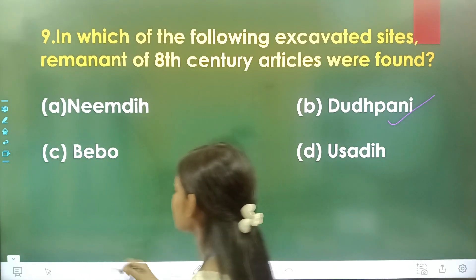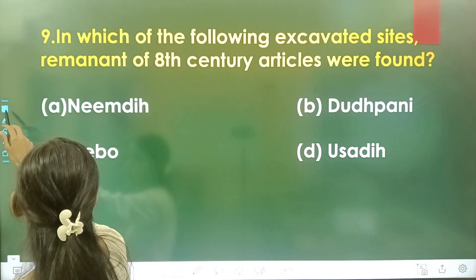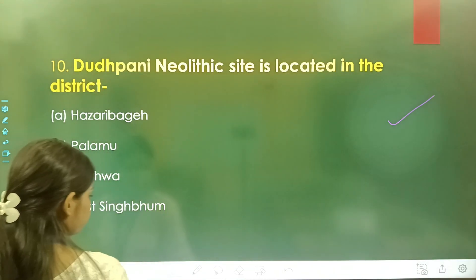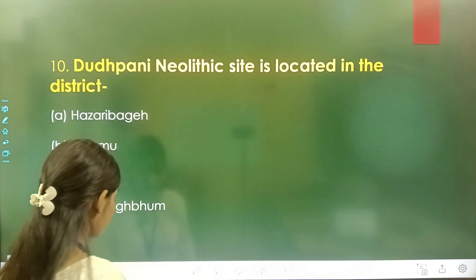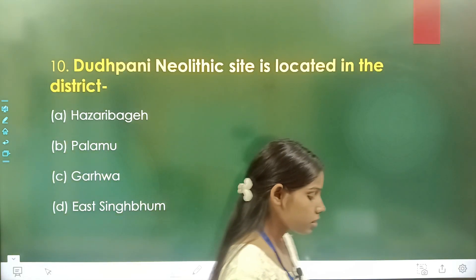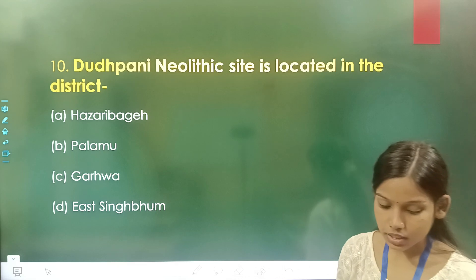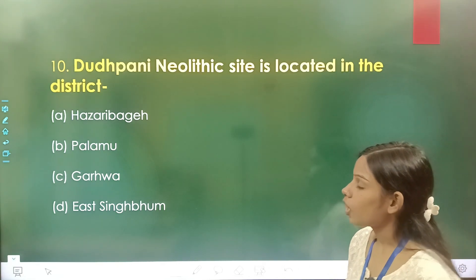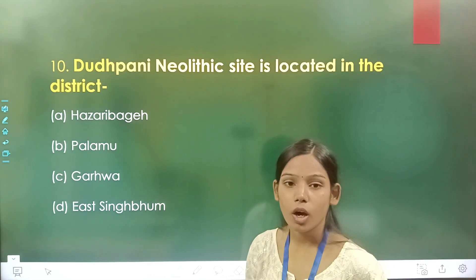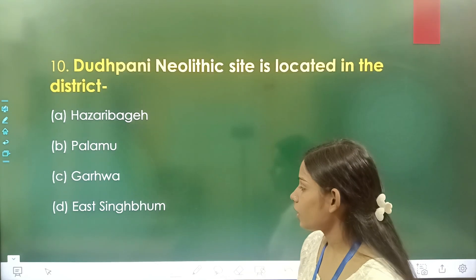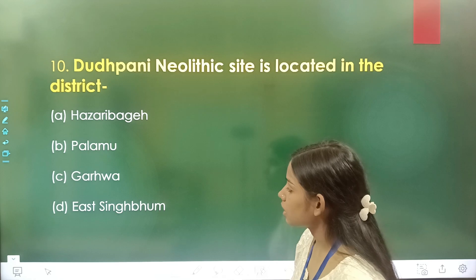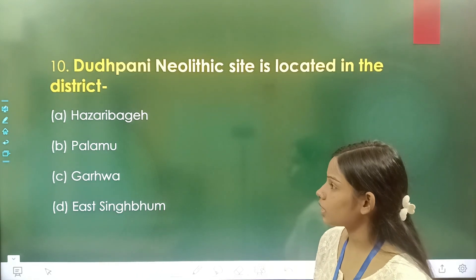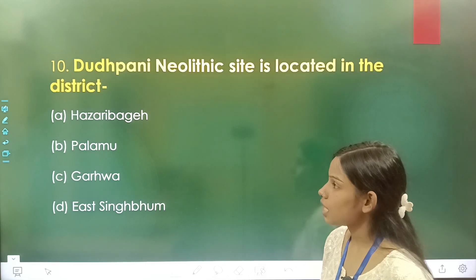Question number 10: Doodh Pani Neolithic site is located in which district? Option A is Hazaribag, option B is Palamu, option C is Garhwa, and option D is East Singhbhum. The correct answer is option A, Hazaribag.